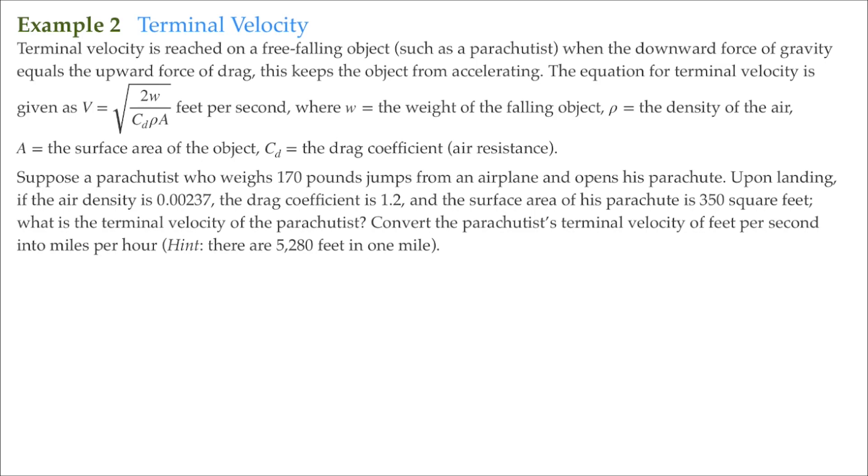The equation for terminal velocity is given as V, and here it is here, this big equation here, V is equal to the square root of 2W divided by C subscript D rho A. This is a Greek letter pronounced as rho. This is pronounced C with a subscript of D, and of course this is A.